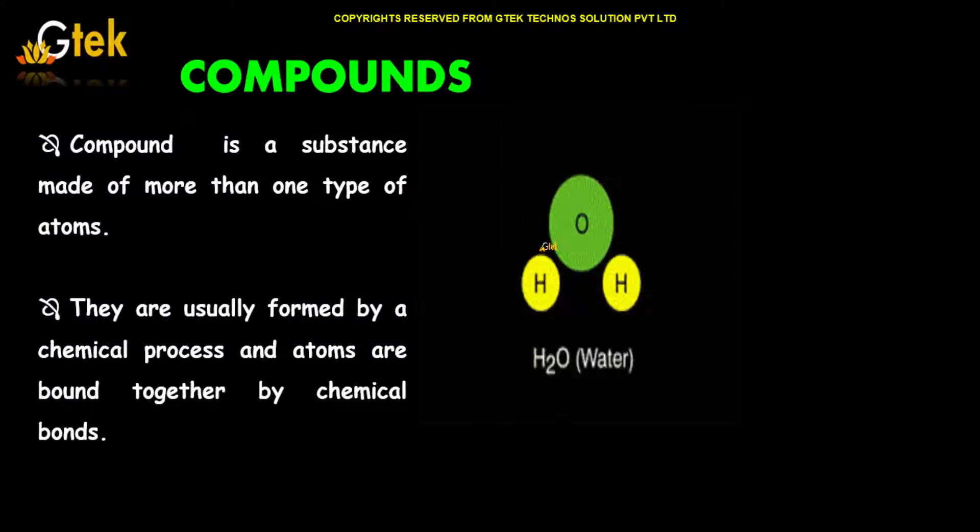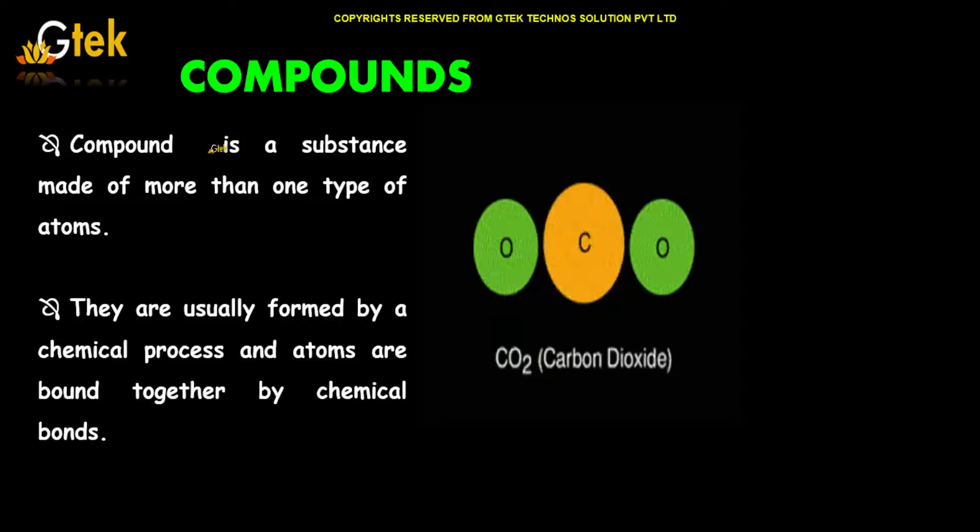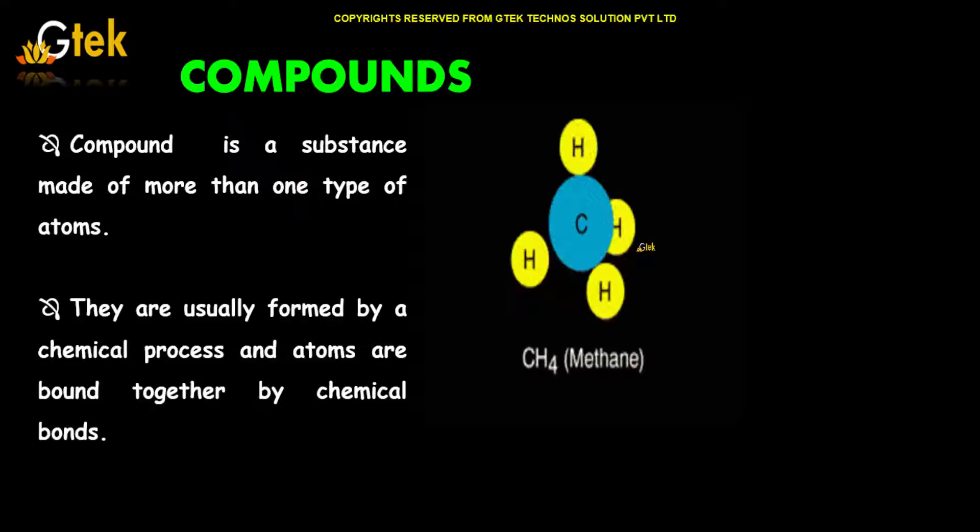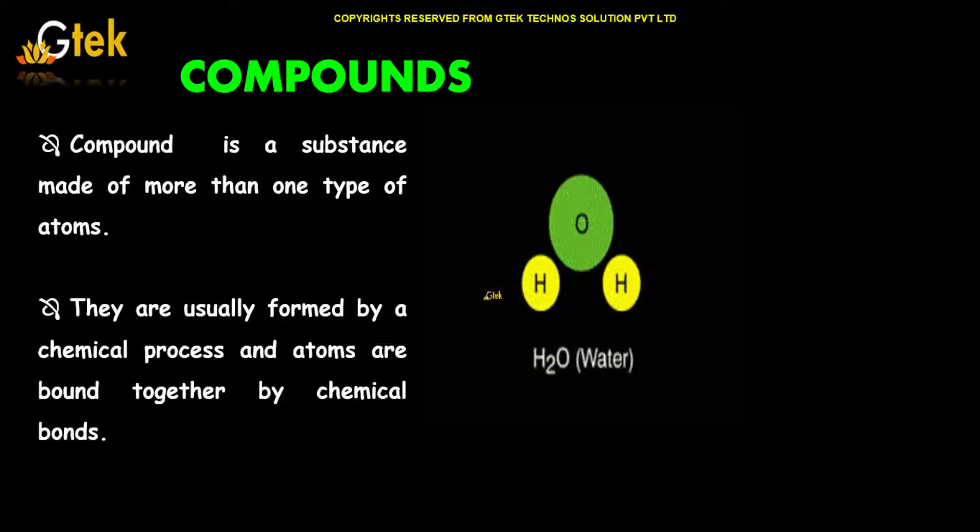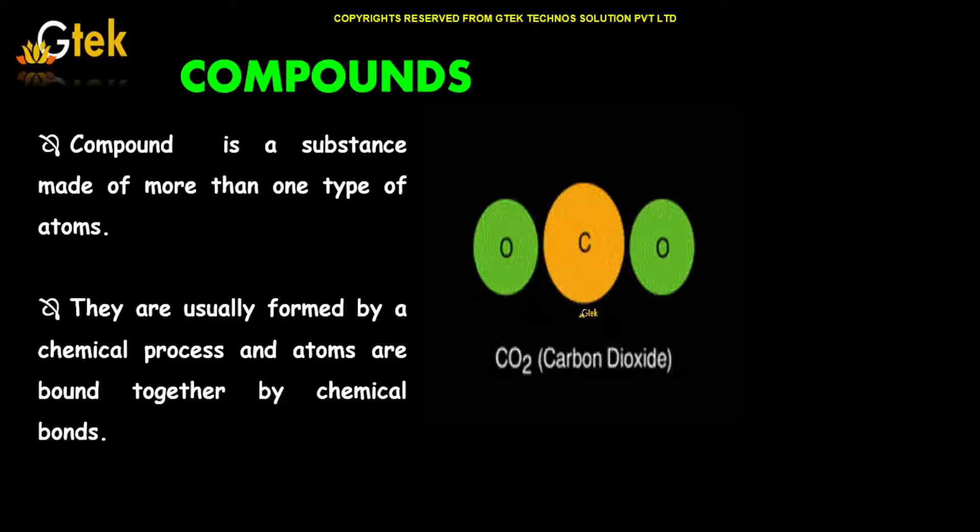Let's move on to compounds. It is a substance made up of more than one type of atom. They are usually formed by a chemical process and atoms are bound together by chemical bonds.